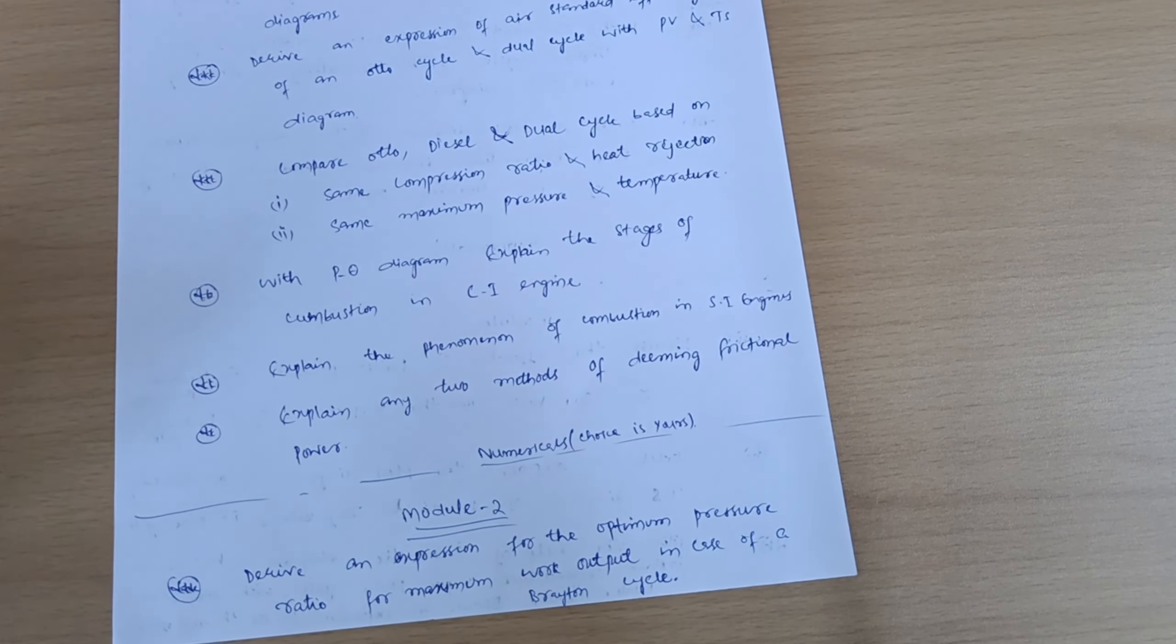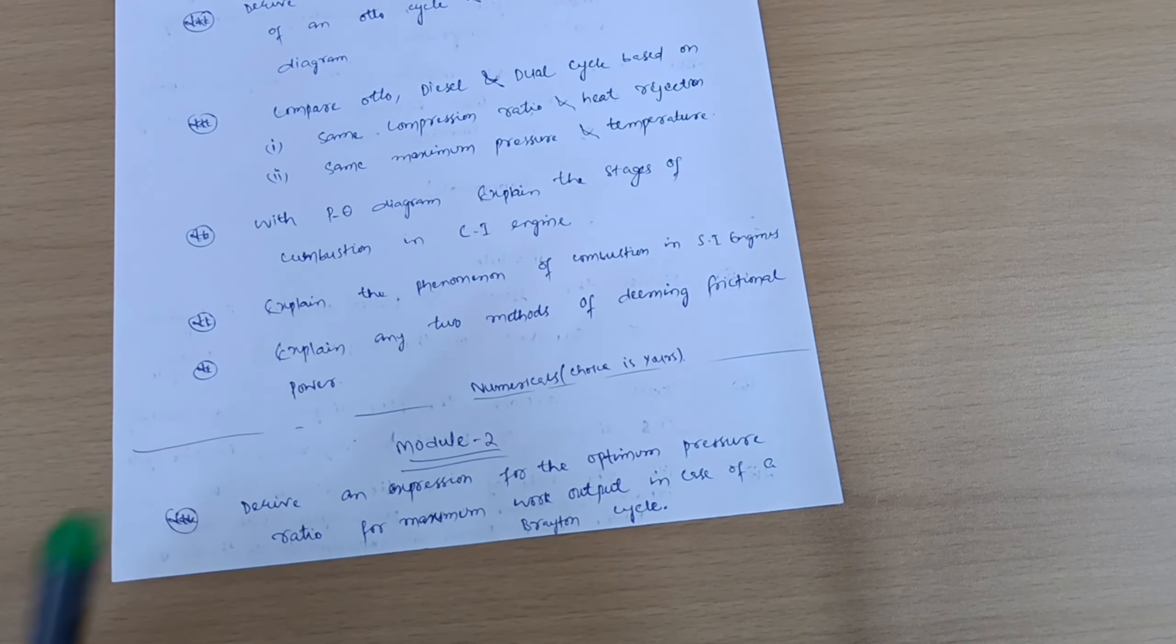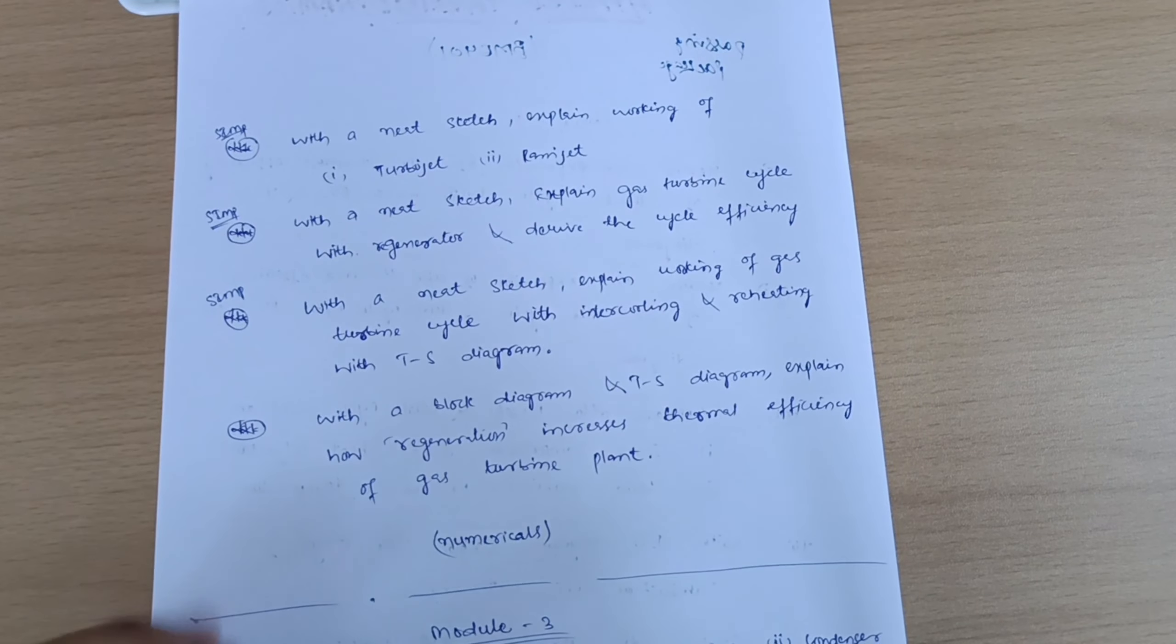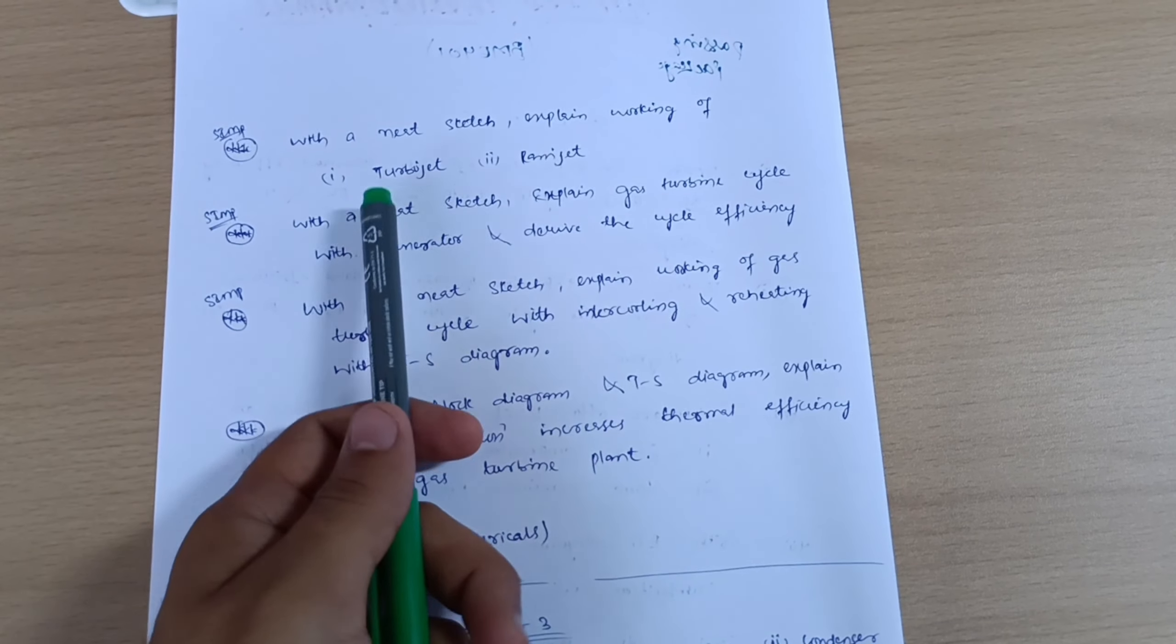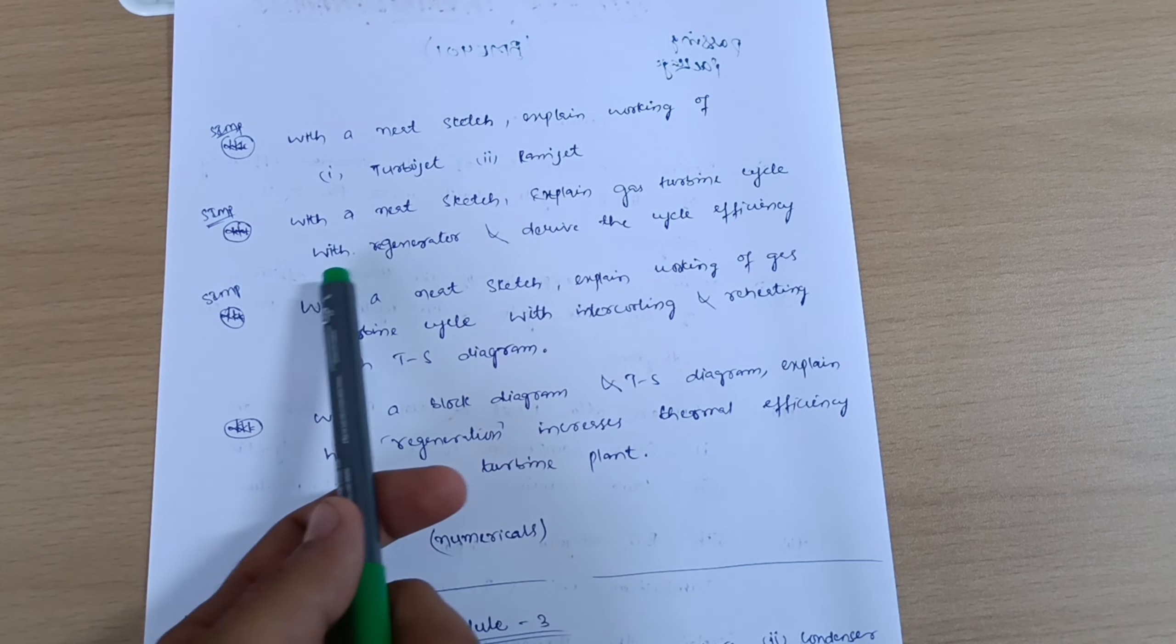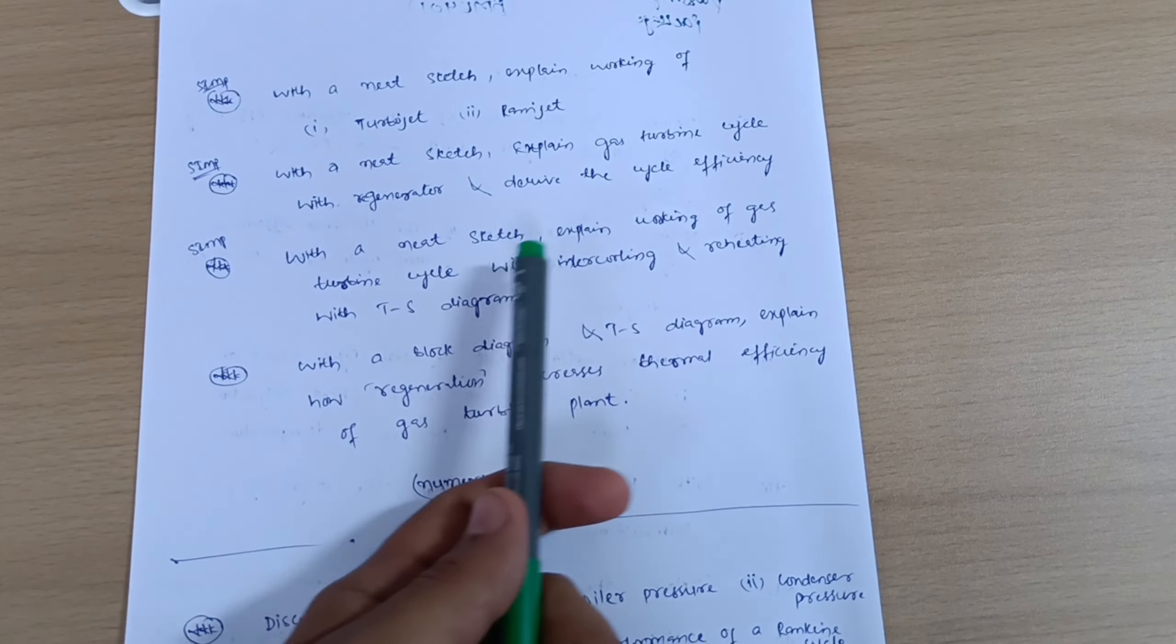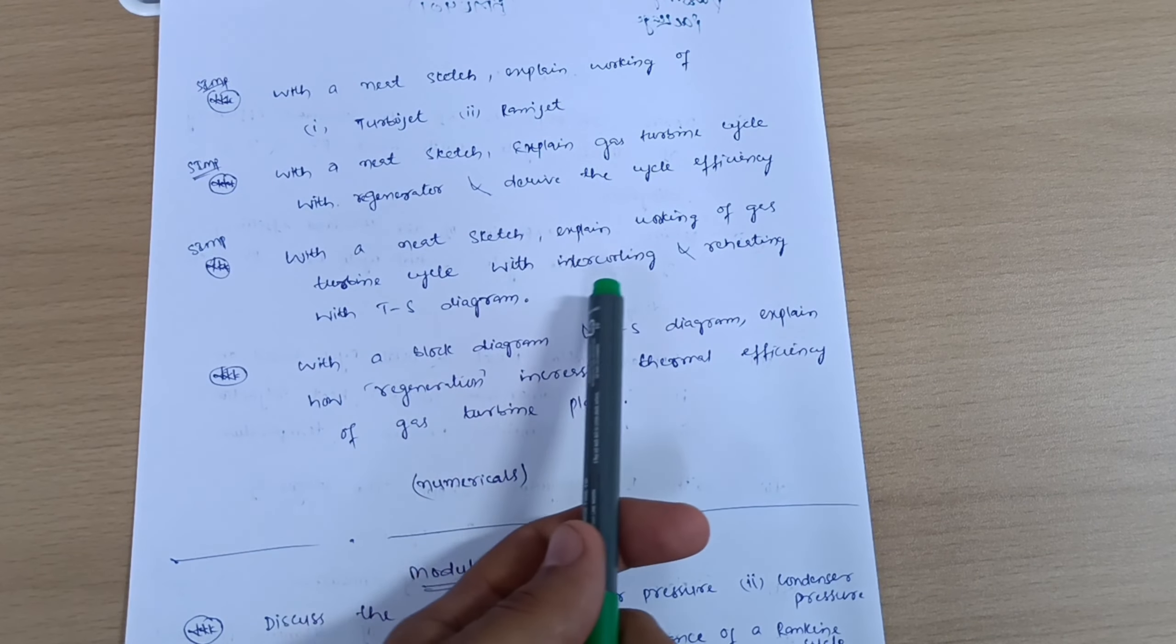You should be aware of the numericals also. Next is Module 2, in which the super important question is: derive an expression for the optimum pressure ratio for maximum work output in case of Brayton cycle. Next, with a neat sketch explain working of turbojet or ramjet. With a neat sketch, explain gas turbine cycle with regenerator and derive the cycle efficiency.